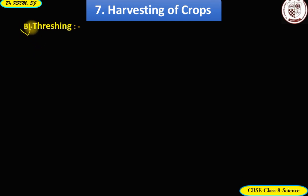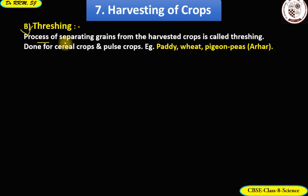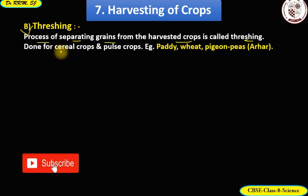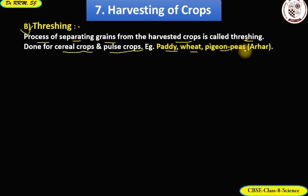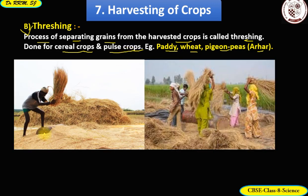Threshing is the process of separating grains from the harvested crops. It is usually done for cereal crops and pulse crops — examples include paddy, wheat, and pigeon peas. Threshing is done by striking the crops against a hard surface, as seen in these images where farmers strike crops against a hard surface.